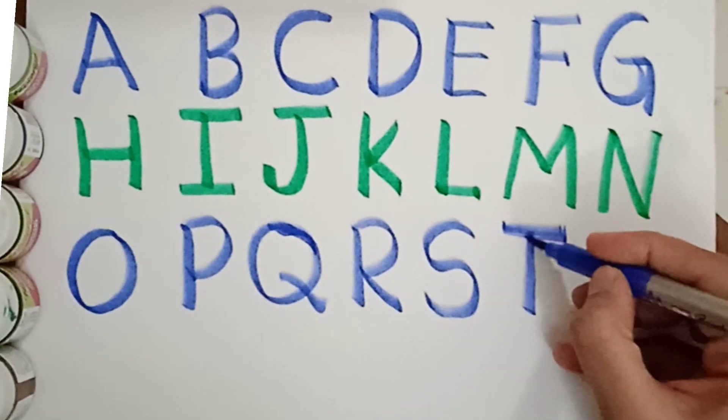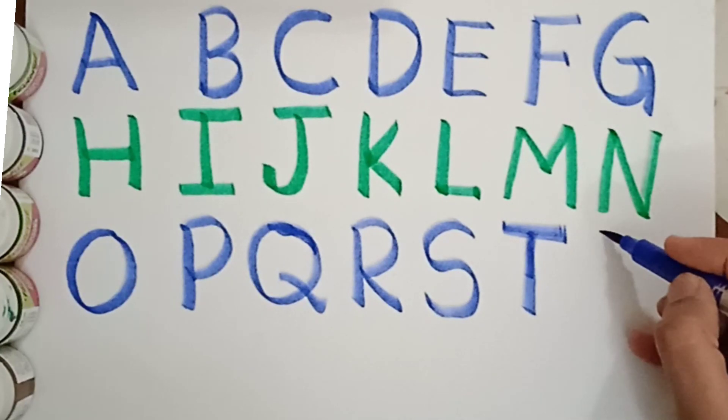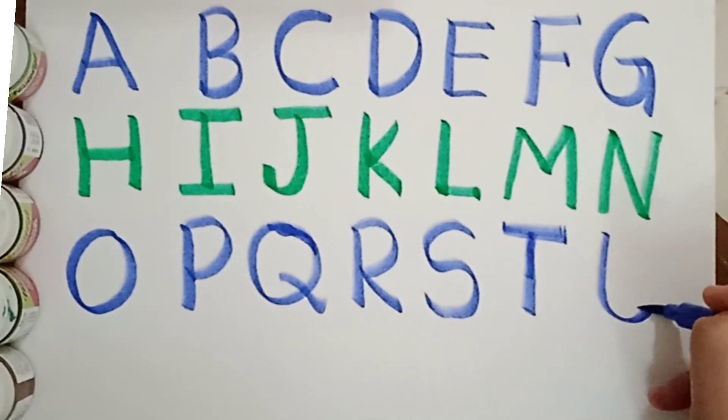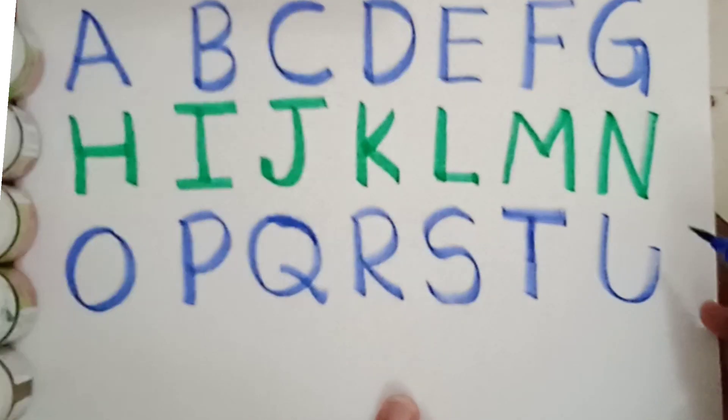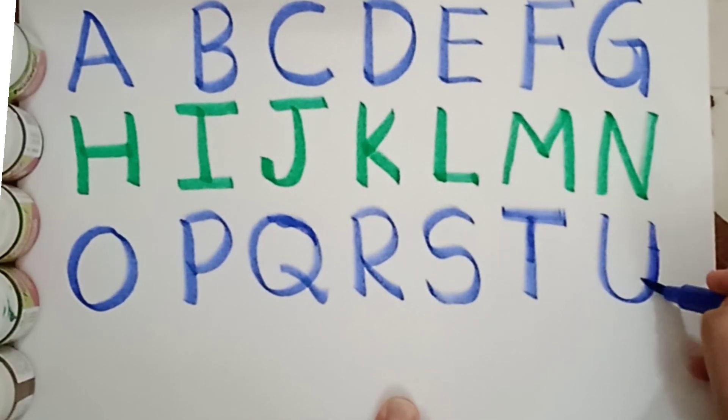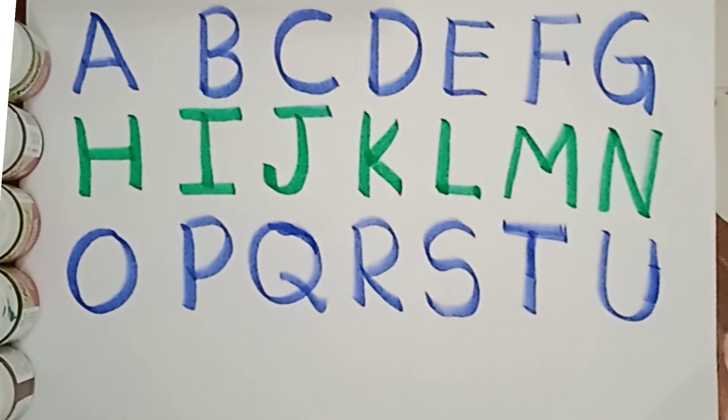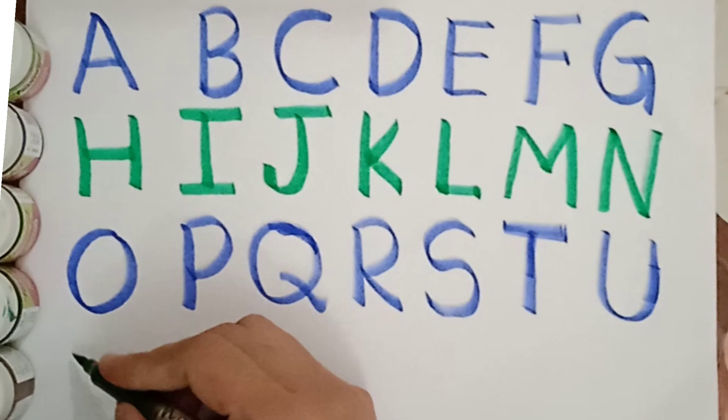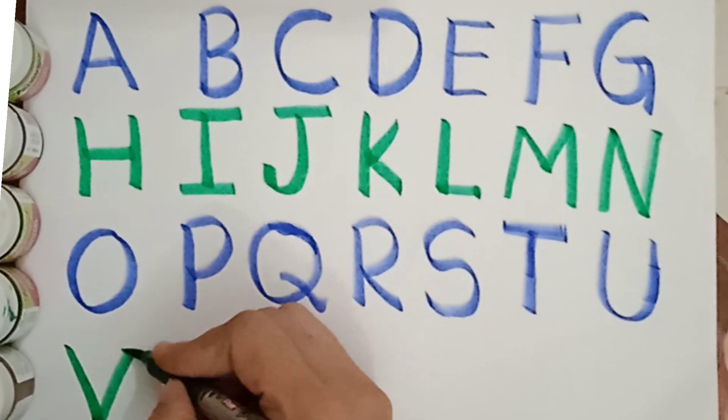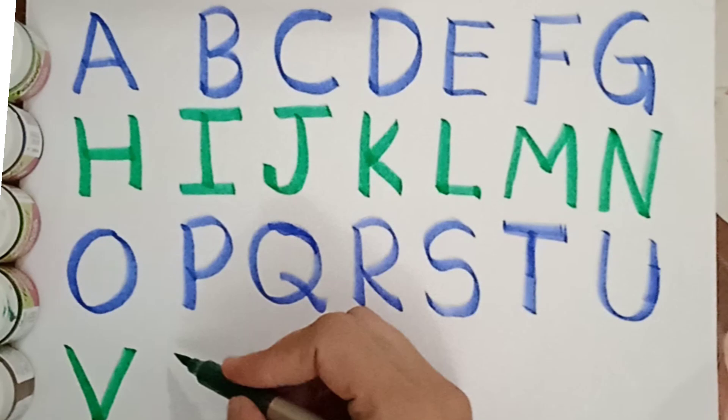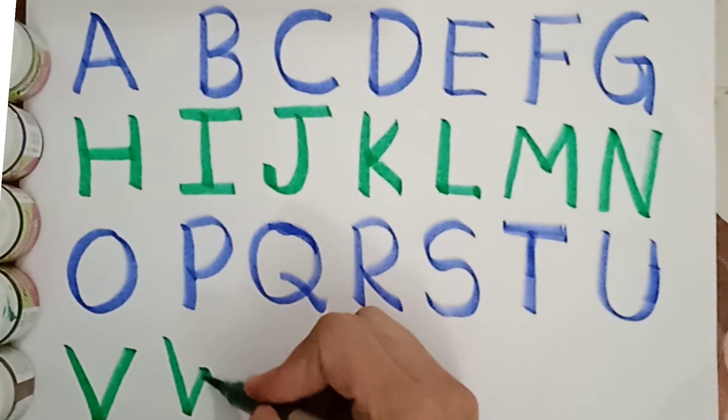Now, come on. The next letter U. U for umbrella. U for umbrella. Next letter is V. V for van. V for van.